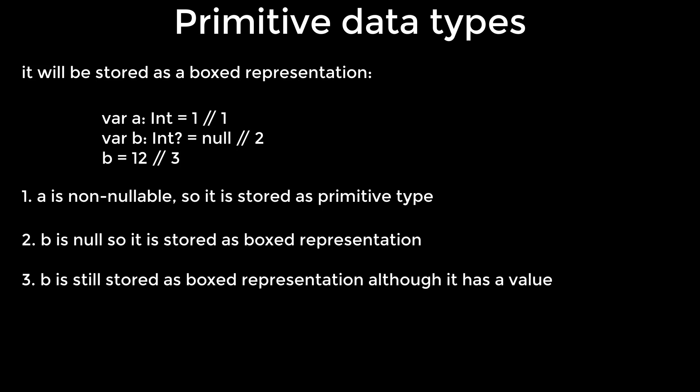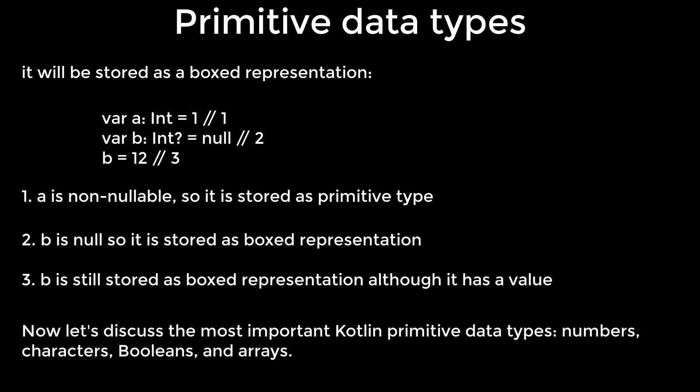Three, b is still stored as boxed representation although it has a value. Generic types cannot be parameterized using primitive types, so boxing will be performed. It's important to remember that using boxed representation composite type instead of primary representation can have performance penalties because it will always create memory overhead compared to primitive type representation. This may be noticeable for lists and arrays containing a huge number of elements, so using primary representation may be crucial for application performance.